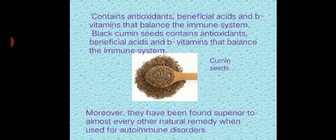Common seeds contain antioxidants, beneficial acids and vitamin B that balance the immune system. Black common seeds contain antioxidants, beneficial acids and B vitamins that balance the immune system. Moreover, they have been found superior to almost every other natural remedy when used for autoimmune disorders. In our local language, we call it zira.